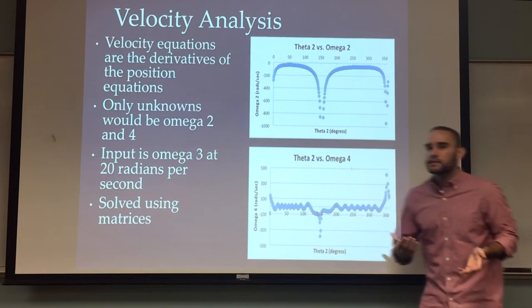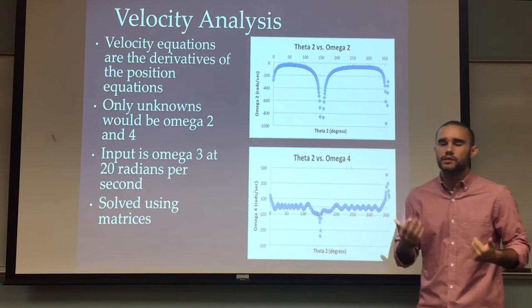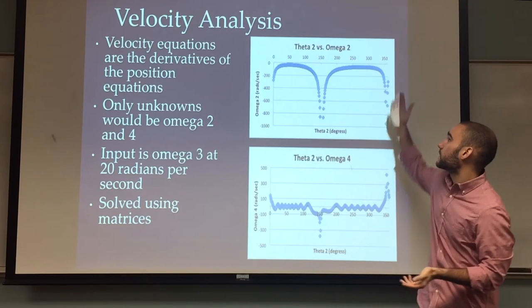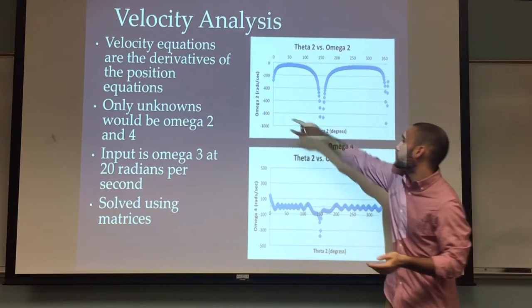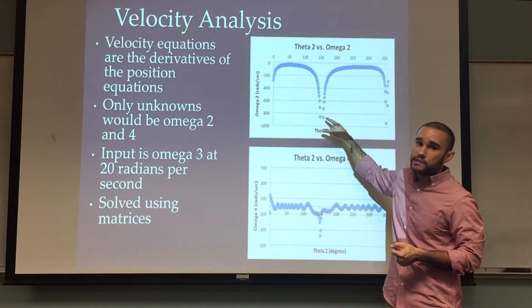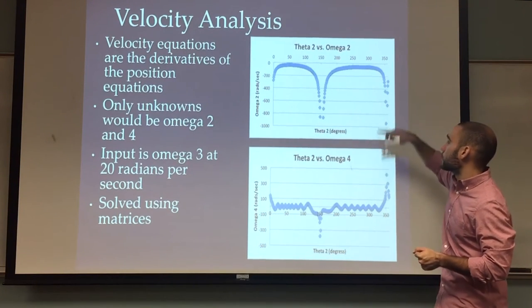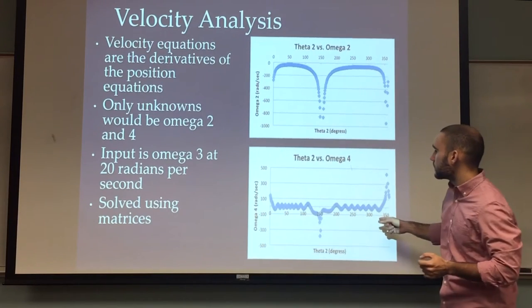For our velocity analysis, it's basically a derivative of our loop equations for positions and then using matrices to solve for your two unknowns, in this case omega 2 and omega 4.